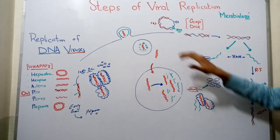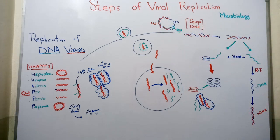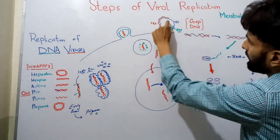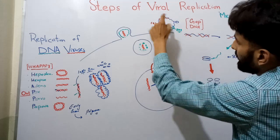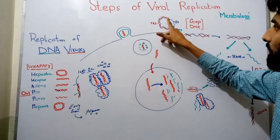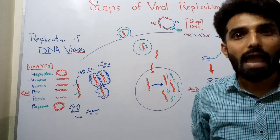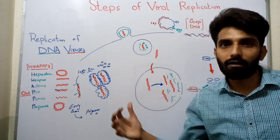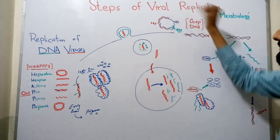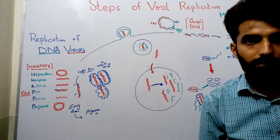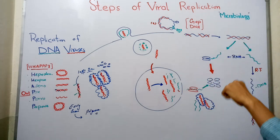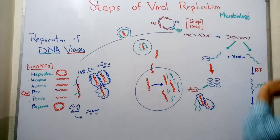Now here you can see another type of double-stranded virus — that is GAP DNA. One strand is complete: the blue strand is the negative strand of DNA, and the red is the positive strand. The blue strand is complete while the red strand is not complete. This is the example of hepatitis B virus. In some double-stranded DNA viruses, a gap is present, and until this gap is filled, the process of replication cannot take place. That is why they are called GAP DNA viruses.